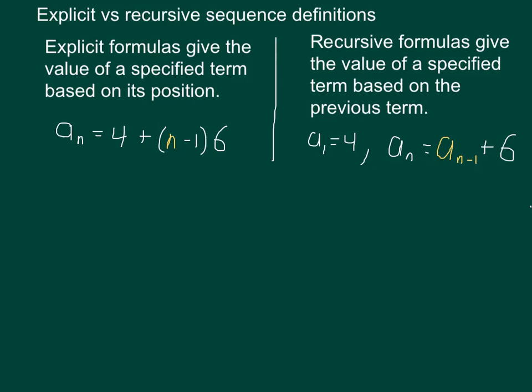There are two major ways to define a sequence, or to spell out to show what all the values of a sequence are going to be. One way is with an explicit formula.